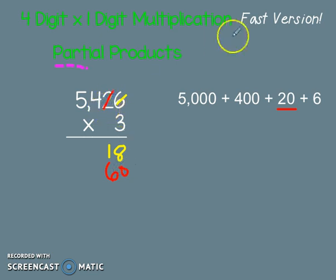Now I'm going to move over to my 4, which means 400. 400 times 3 is 12 hundreds, or 1,200. My 4 is done.